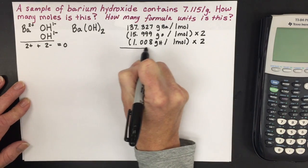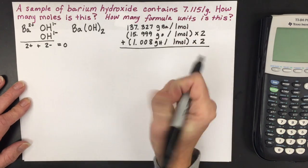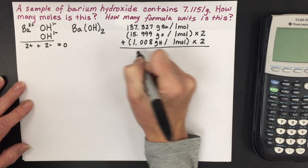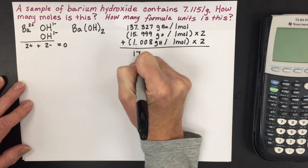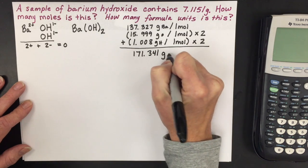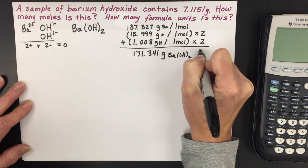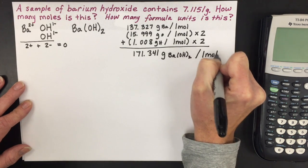When you have all the molar masses, you'll add up that total and you'll get the molar mass for that compound, which is 171.341 grams of barium hydroxide for every one mole of barium hydroxide.